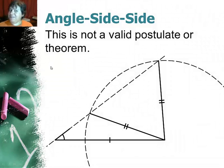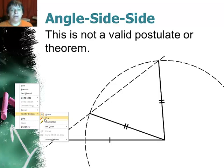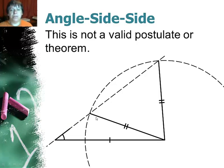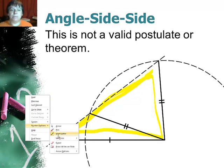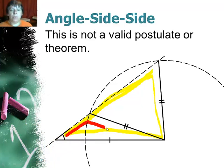Angle-side-side, which I won't say the shortcut for, is not a valid postulate or theorem. How can we tell? As I showed you earlier in the video, if I have this giant triangle, that's one way I can build this triangle with this angle, that side, and the other side. Or I can still build a different triangle, like this one, this smaller one,